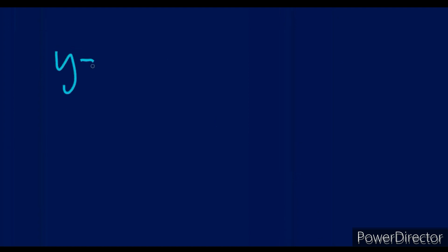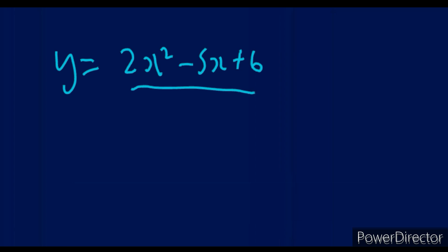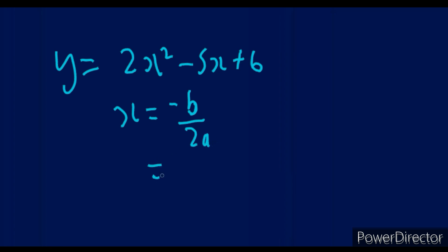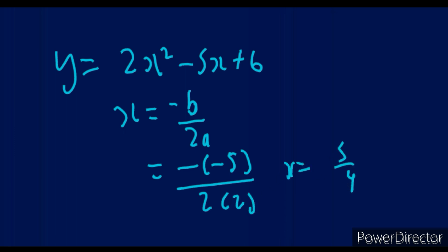Let's say we're given the equation 2x² - 5x + 6. If they ask for the axis of symmetry, you can see this is a parabola. The axis of symmetry is just the x-value of the turning point. So all you do is say x equals -b over 2a, which gives negative(-5) over 2×2, and this equals 5 over 4. This is the x-value of the turning point and also the equation of the axis of symmetry.